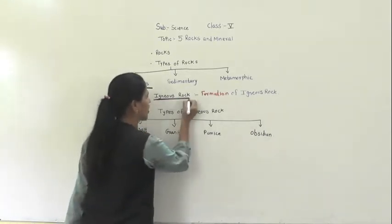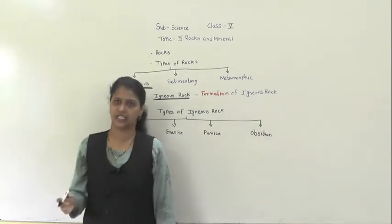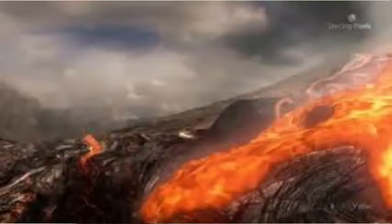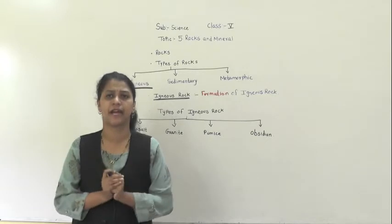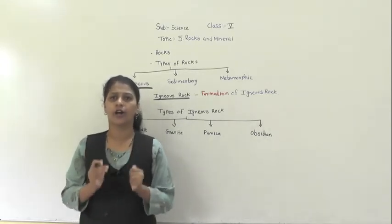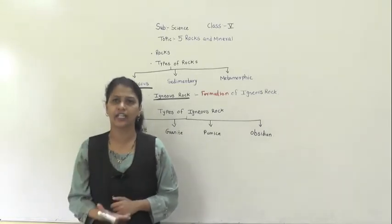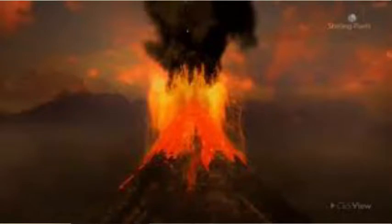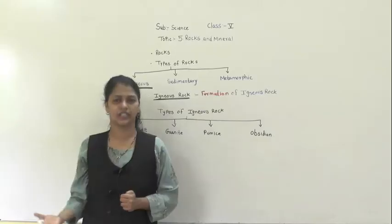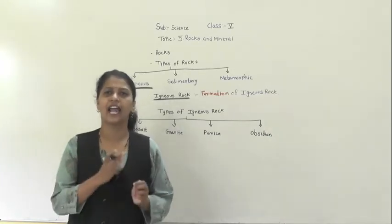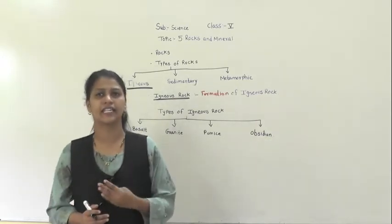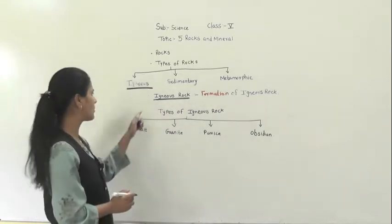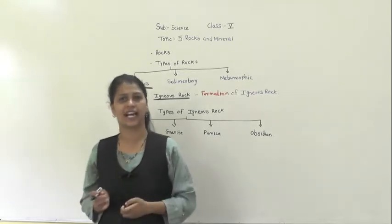When the lava cools down and solidifies, it forms a rock called an igneous rock. This is how the igneous rock is formed. To recap: the center of the Earth is made up of hot molten rock; when a volcano erupts, the magma flows to the surface; and when the lava cools and solidifies, igneous rock is formed. You can see the diagram in your science book.